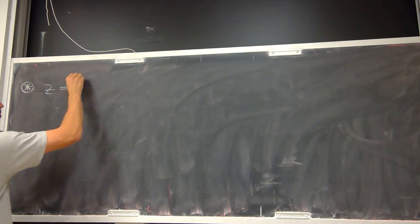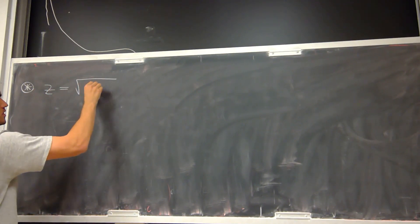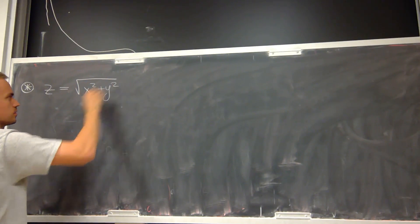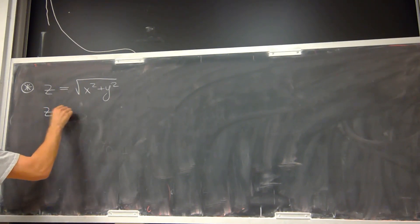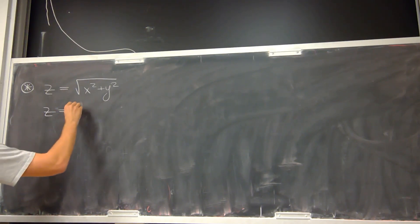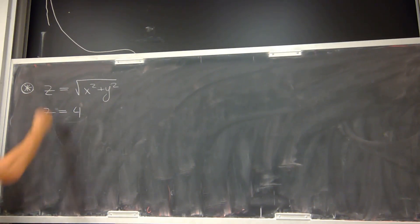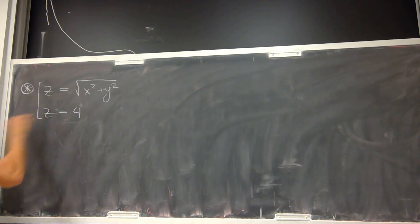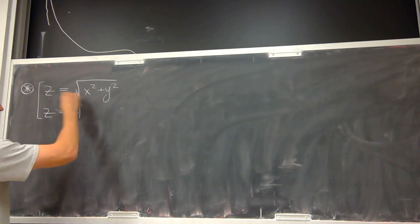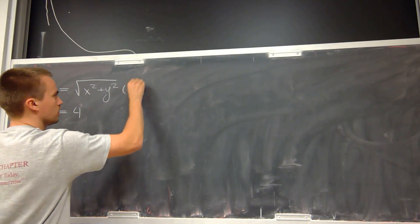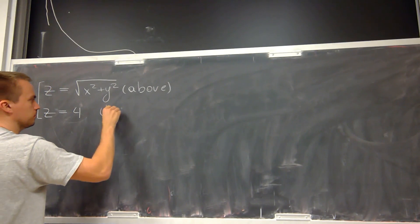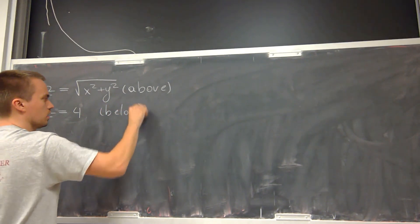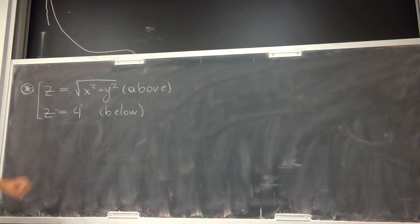Let's say I'm given the cone given by the equation z equals the square root of x squared plus y squared, and this cone is bounded by the plane z equals 4. My region E is going to be above my cone and below my plane.